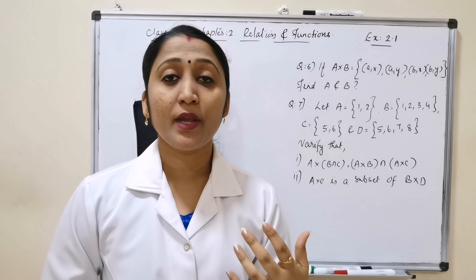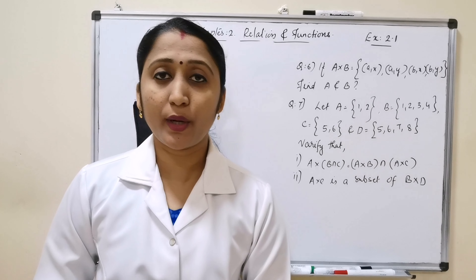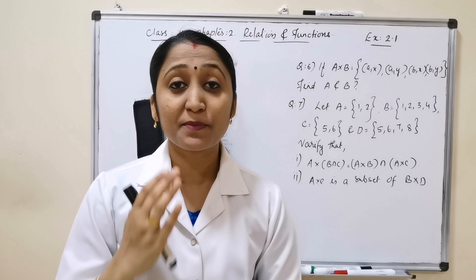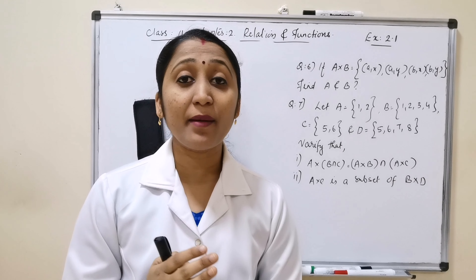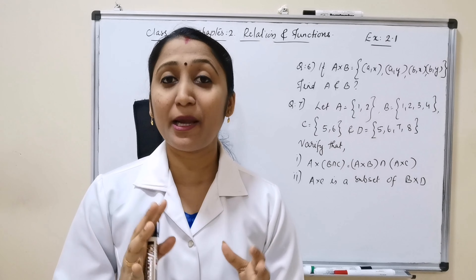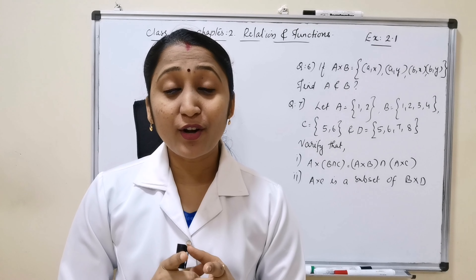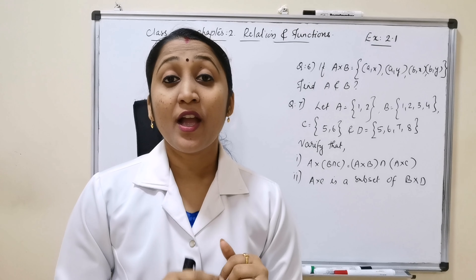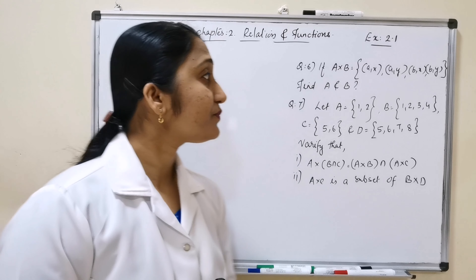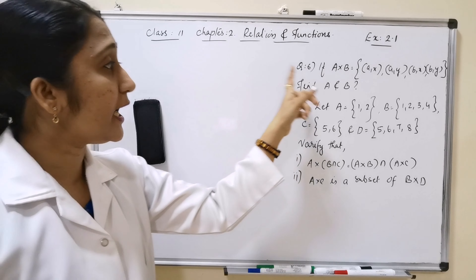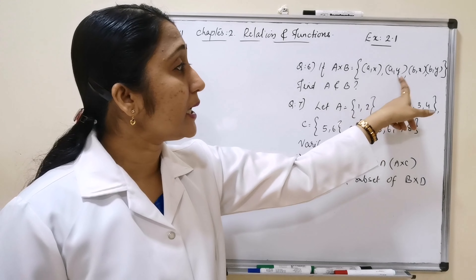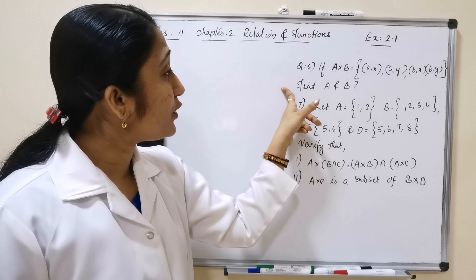Hello, my dear students. Welcome to my channel, Master Mathematics by Shaiji Mohandas. Today we are discussing Class 11, Chapter 2: Relations and Functions, Exercise 2.1, question number 6 onwards. Last class we discussed up to question number 4. Before starting, if you are new to my channel, please subscribe and hit the bell icon so you get notified whenever I post new videos — that will help you achieve 90 plus in your board examination.